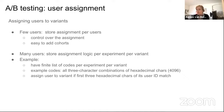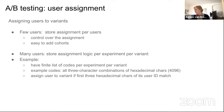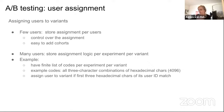In the case of many users, you can store the assignment logic per experiment per variant. One example is maintaining a finite list of codes — for instance, all three-character combinations of hexadecimal characters, giving about 4,000 combinations. Each experiment gets a subset, and to assign a user, you hash their user ID, take the first three characters of the hash, and assign them to the experiment and variant matching those characters. This enables very quick online experiment assignment.